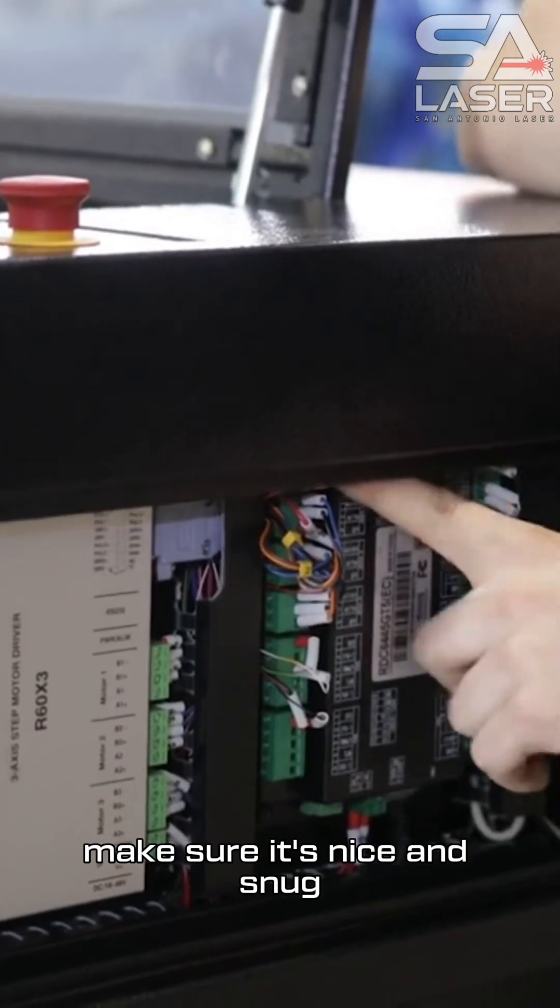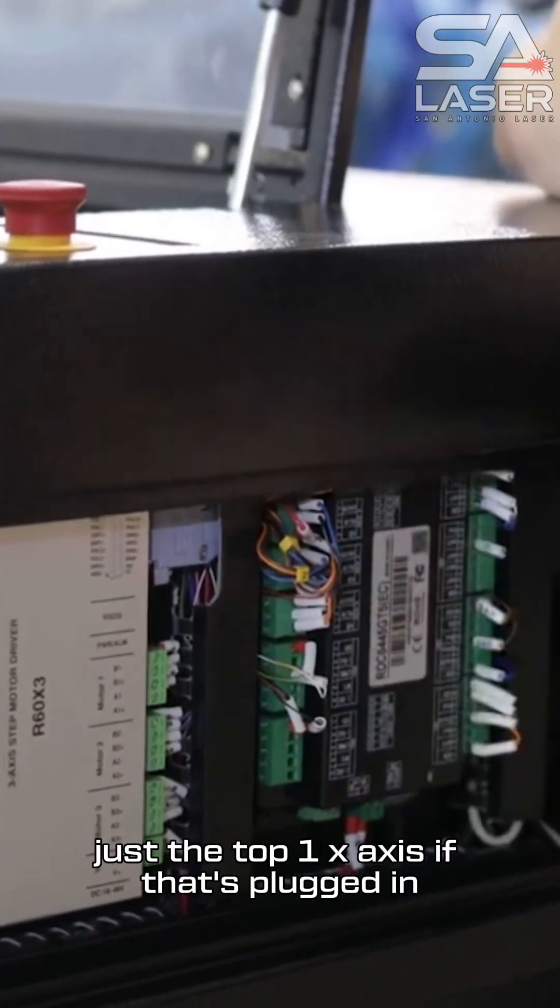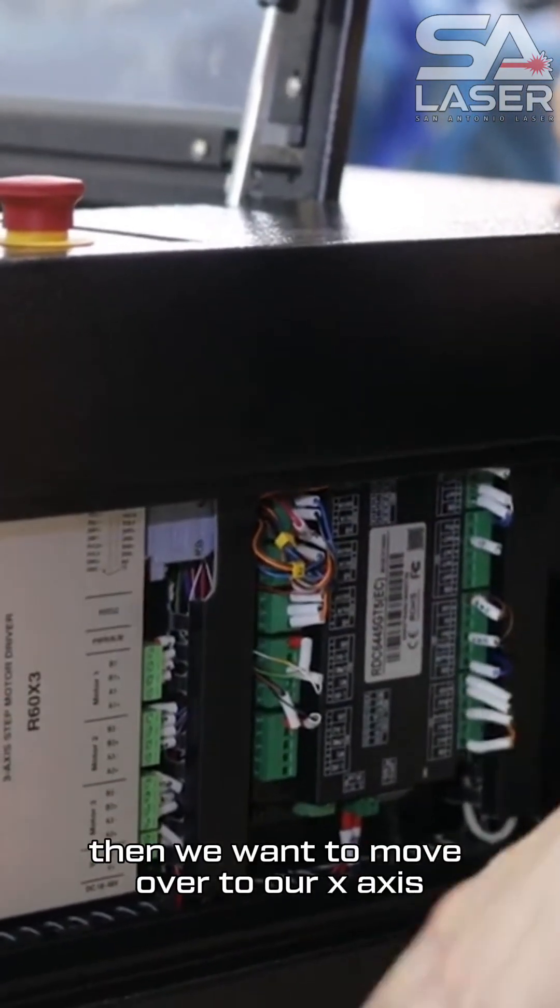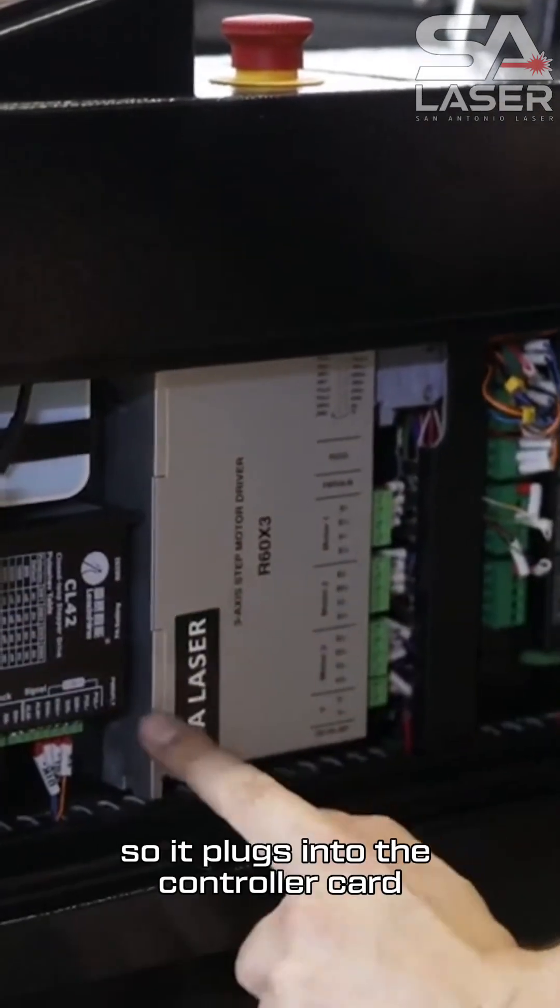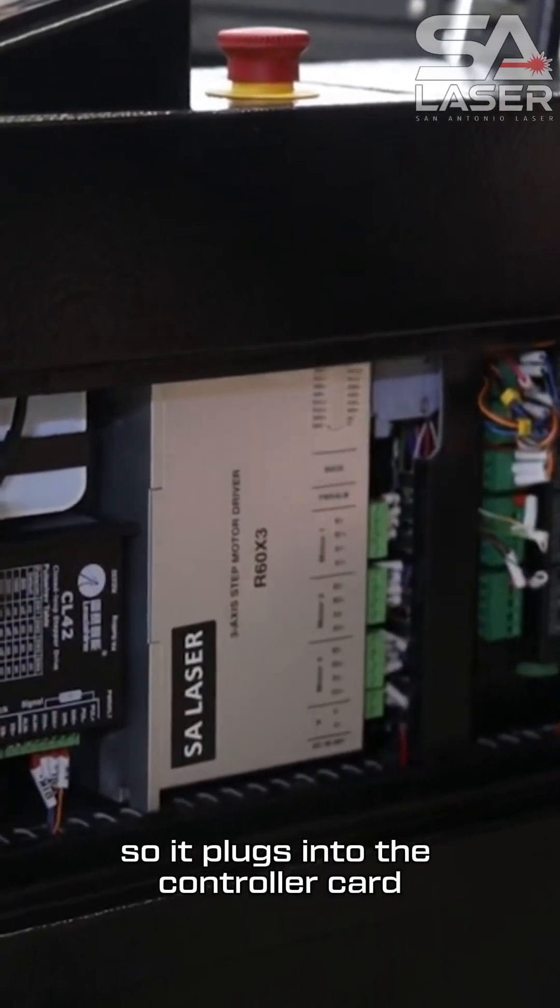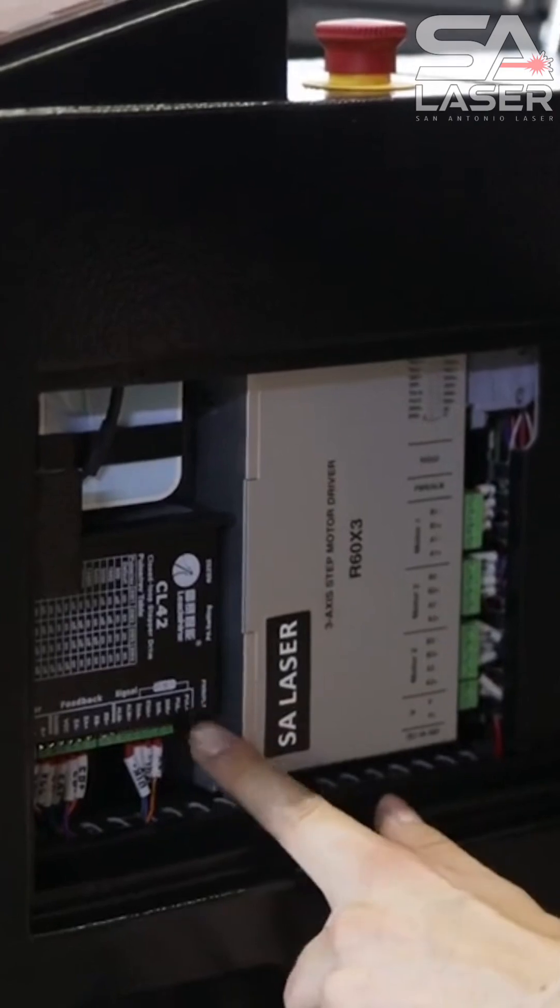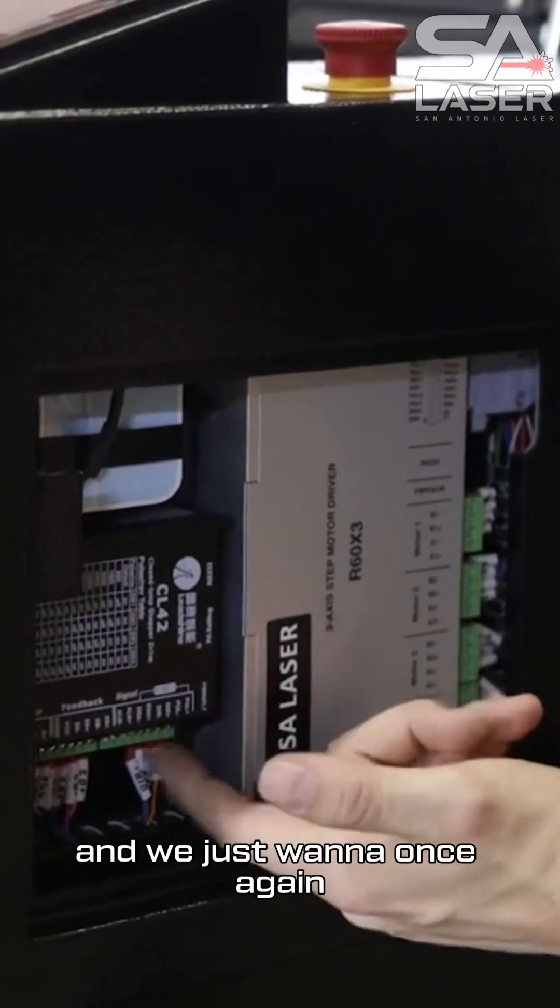Make sure it's nice and snug - just the top one, the x-axis. If that's plugged in, then we want to move over to our x-axis motor controller, which is down here - this little black box. It plugs into the controller card and works its way all the way over here. This is its end, and we just want to once again